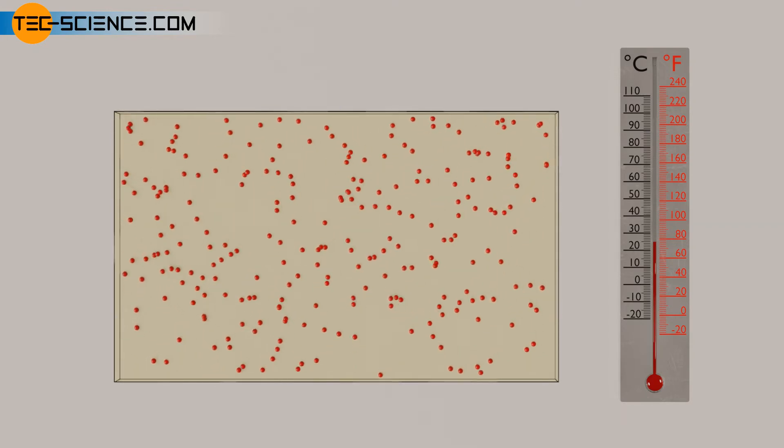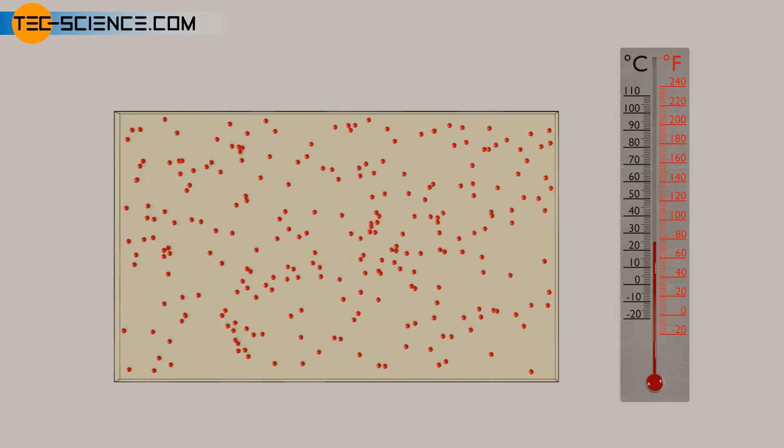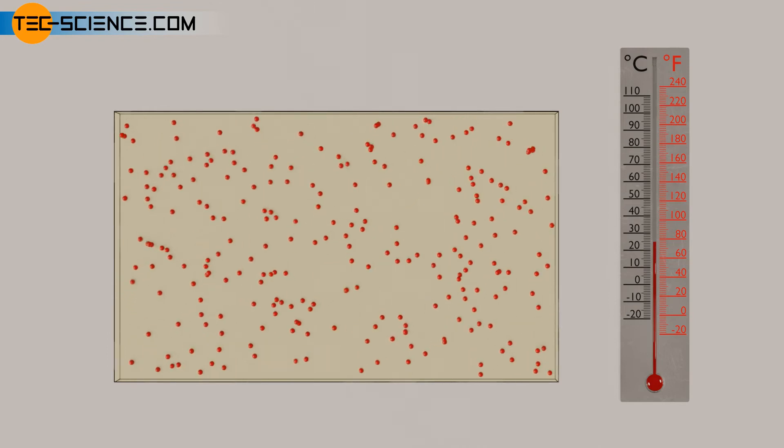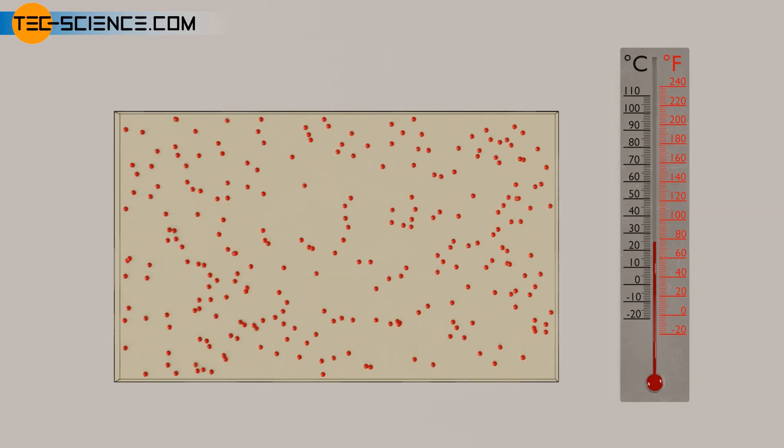At high temperatures, the molecules are very strongly in motion and thus occupy a larger space. In liquid-in-glass thermometers exactly this principle of thermal expansion is used to determine the temperature.